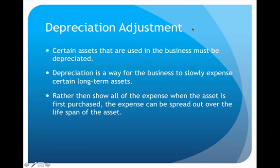The next adjustment is for depreciation. There are certain assets we own that we have to depreciate — specifically the long-term assets. These are assets that we're going to own and use in the business for many years. GAAP requires that these types of assets must be depreciated, meaning we take the expense and spread it out over the lifespan of the asset rather than show all the expense at once.